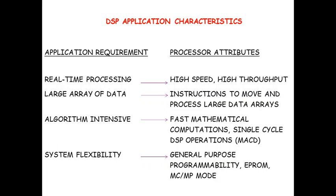Let us have an insight into the DSP application characteristics and how the application requires mapping to the processor attributes. For any specific application or range of applications there are varied requirements: the application will support real-time processing, it needs to process large arrays of data, the algorithm will be highly intensive, and then there is system flexibility. In order to match all these applications, the processor attributes should be such that to process real-time data it should have high speed and high throughput.